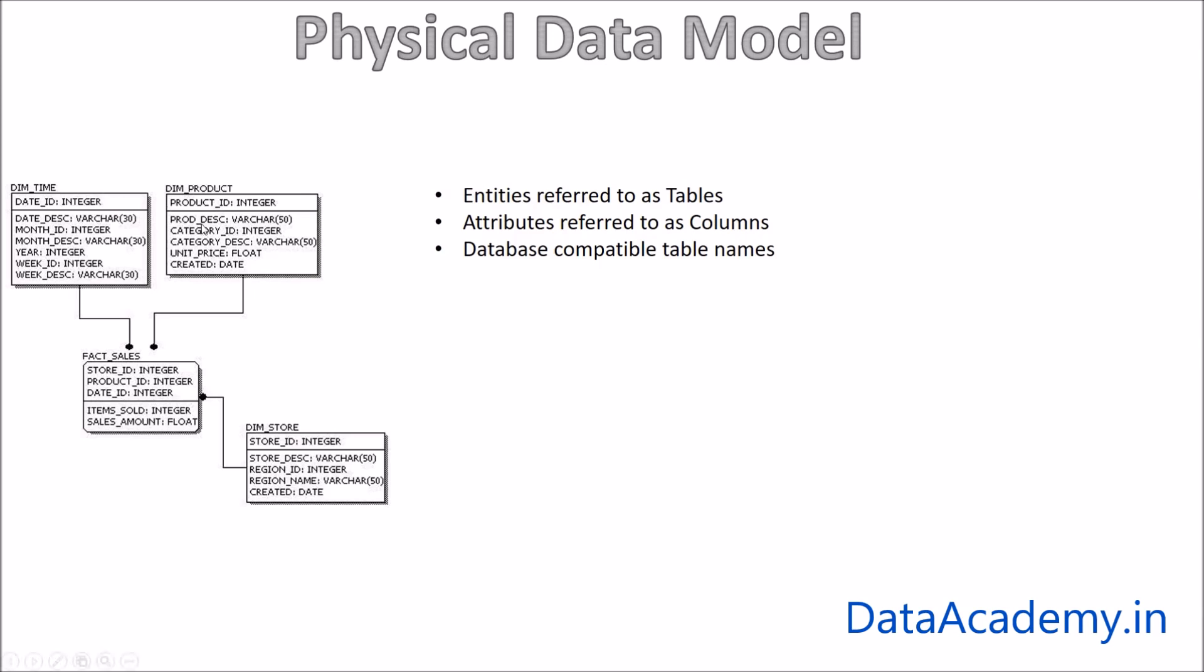And one other thing that we do is we try to keep the column length as minimal as possible. So as it's evident from here, for product the short form is prod. So product description is now replaced here with prod underscore desc. So these are database compatible.